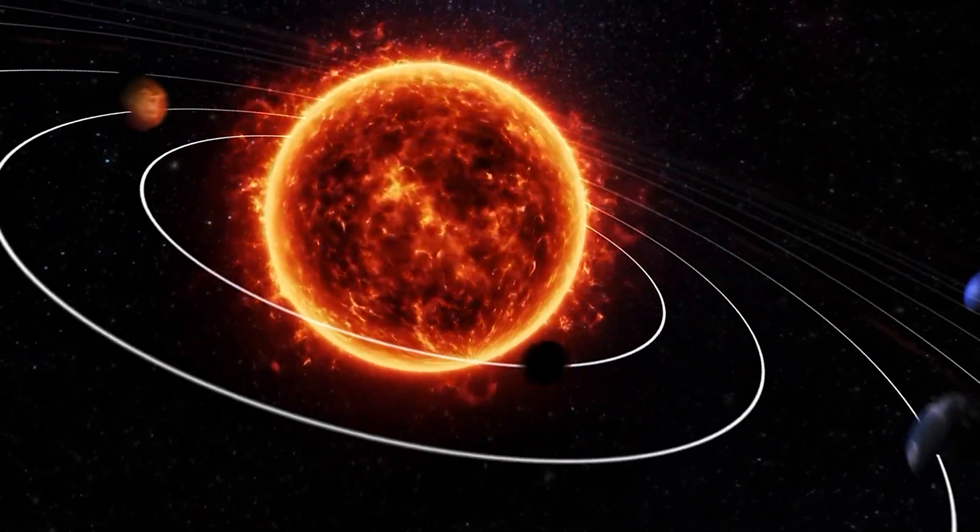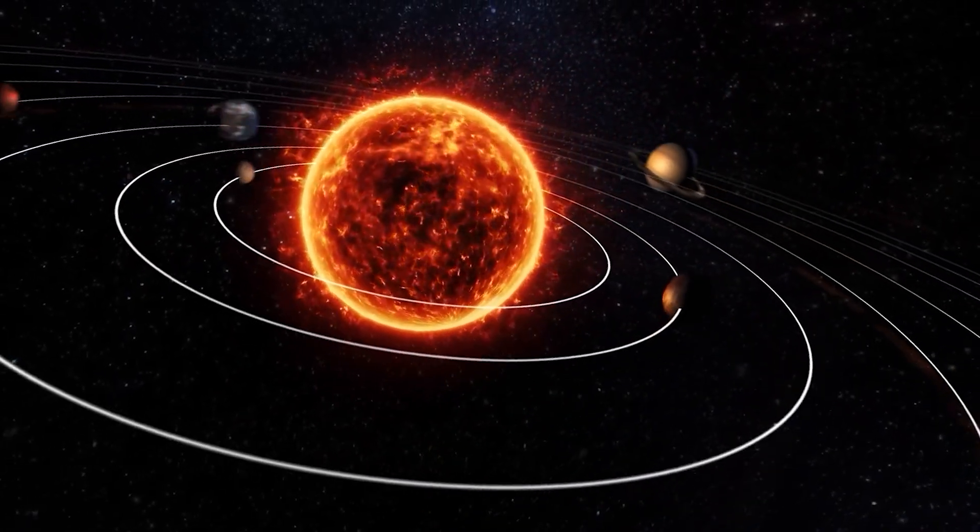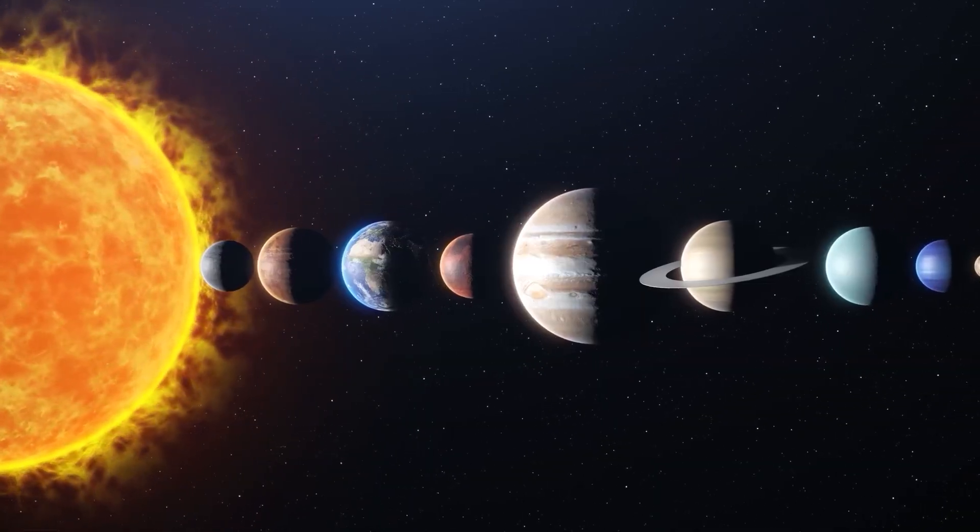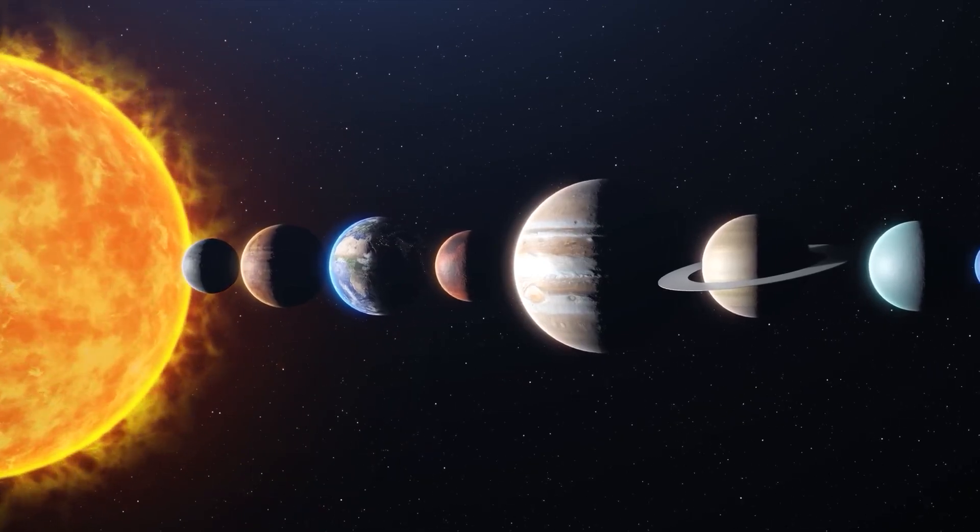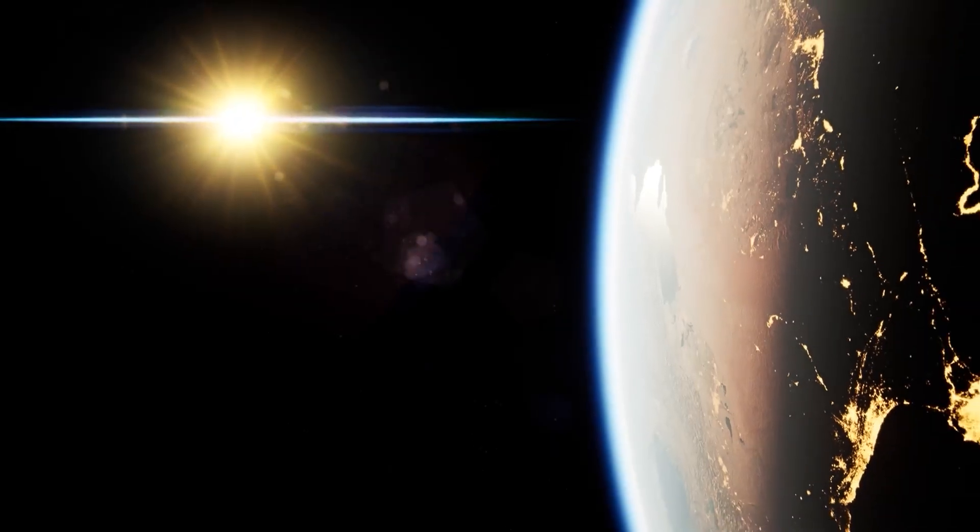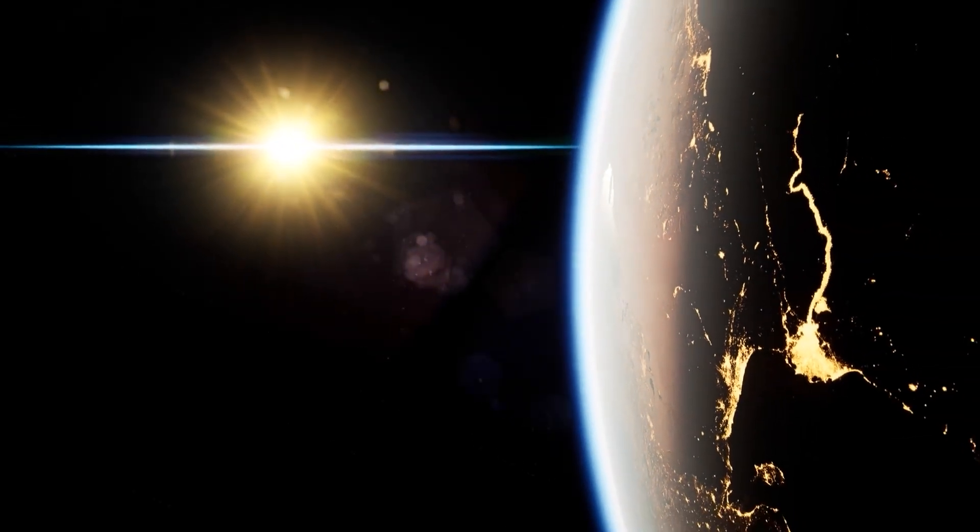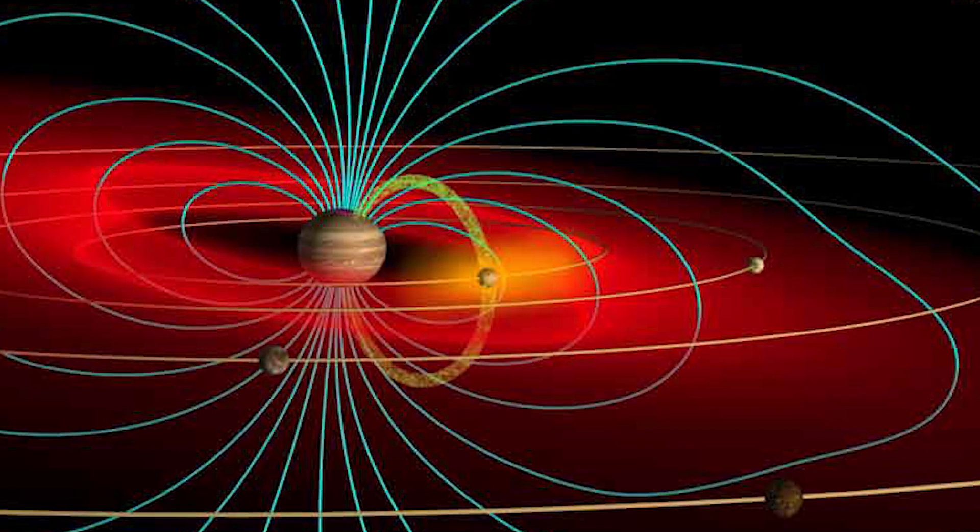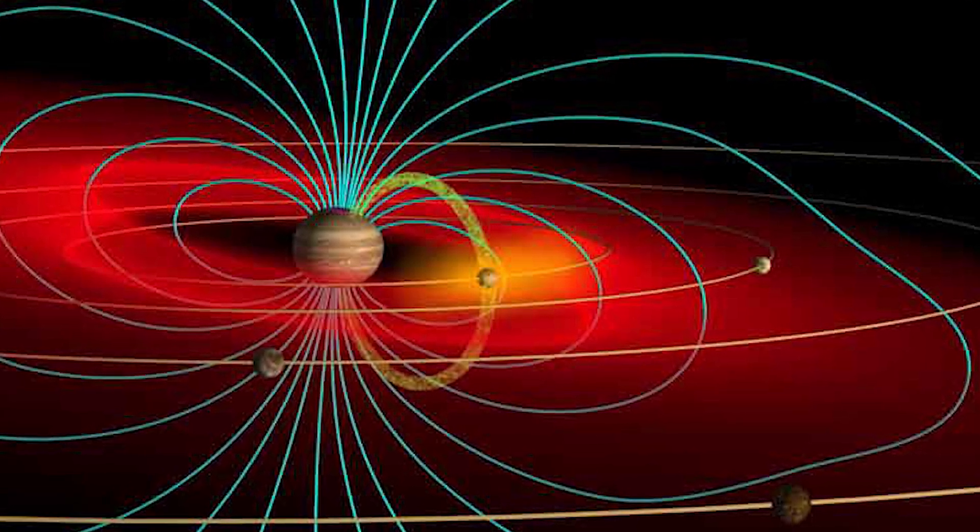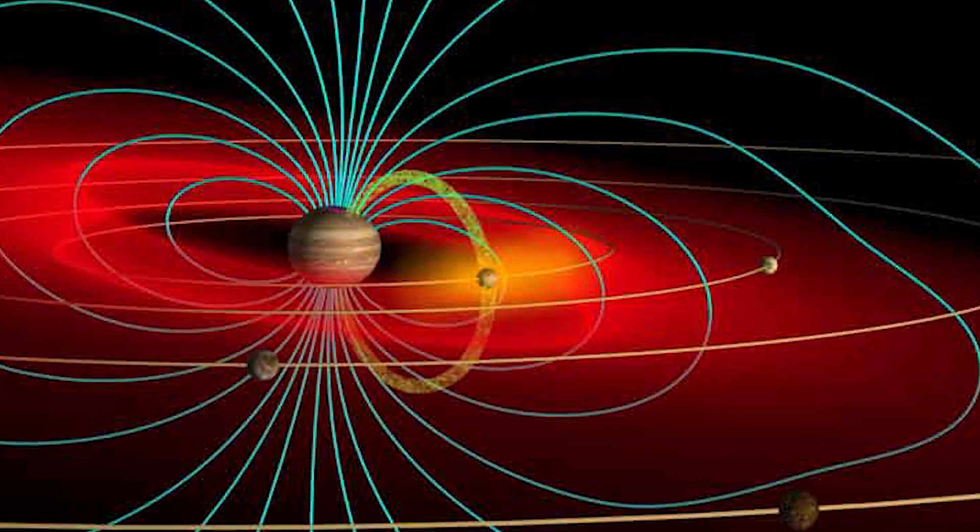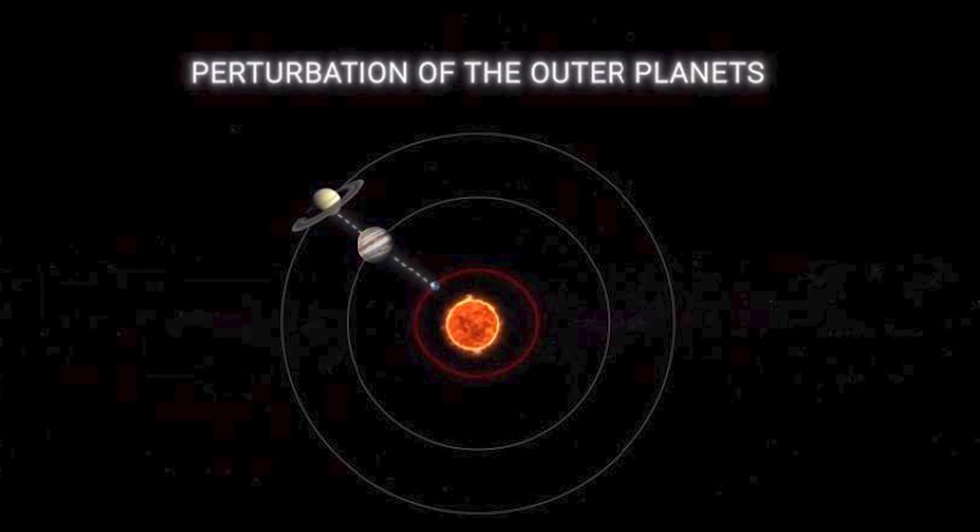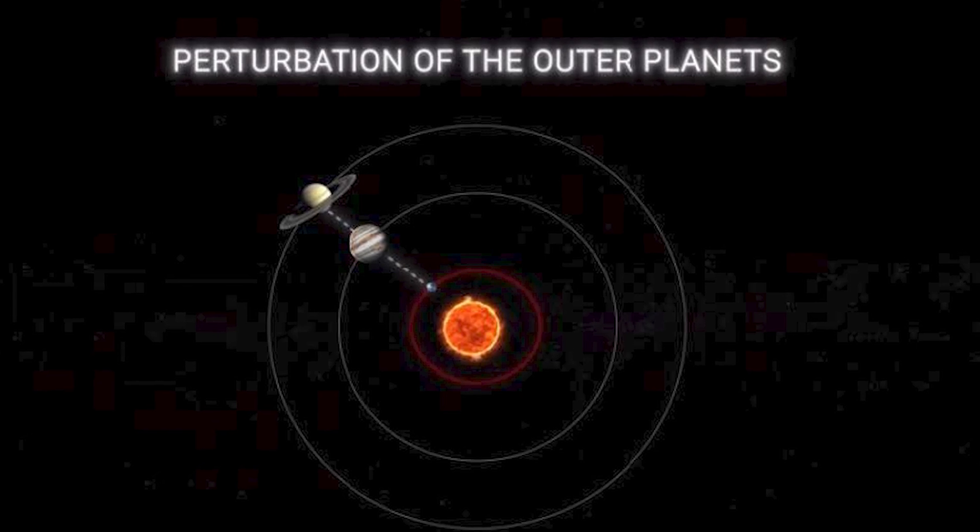The common depiction of the solar system with the Sun at the center and planets revolving around it is somewhat misleading. The planets, especially the gas giants Jupiter and Saturn, exert gravitational pull on the Sun and Earth, causing shifts in their orbits. When Jupiter and Saturn come into even slight alignment, their collective gravitational influence significantly impacts all entities in the solar system. This considerable effect is referred to as the perturbation of the outer planets.